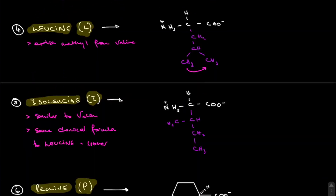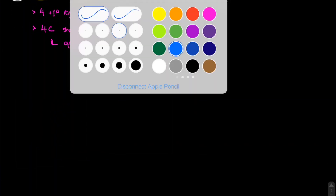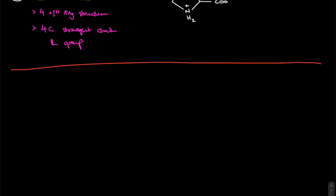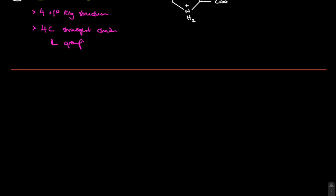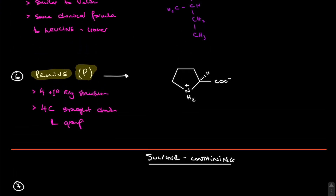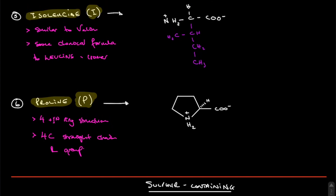Now moving on to the next group — determined by their properties — the sulfur-containing amino acids. There are only two. They're not particularly different in structure from the aliphatics, which is a good point to remember. They're quite similar, especially methionine with respect to proline, other than its ring structure.